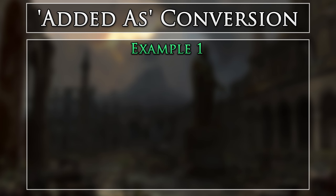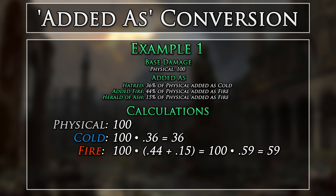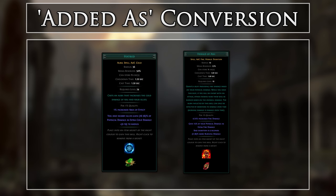For example, let's say we have the following: 100 physical base damage, and the following conversion modifiers as added as — Hatred, added fire, and Herald of Ash. We will perform the following calculations to get the final damage values. As you can see, we are purely gaining damage on top of our base damage. This is why many people make use of Hatred or Herald of Ash, as getting a better physical weapon, or picking up a physical weapon damage node in the tree, will not only increase your physical damage, but will also increase the damage added from physical sources.